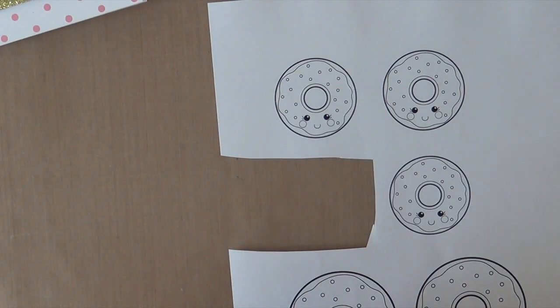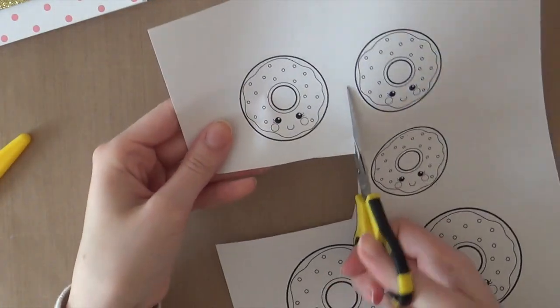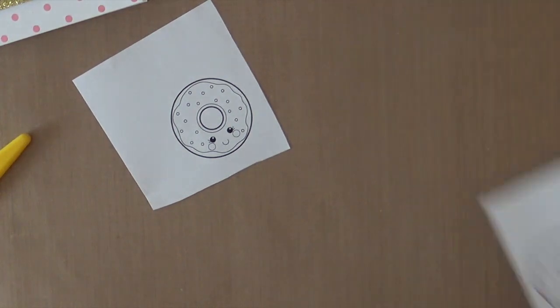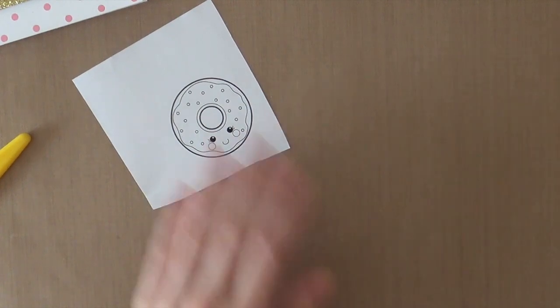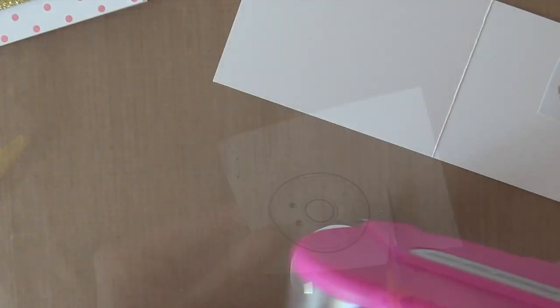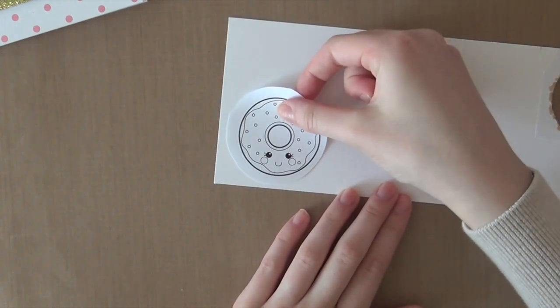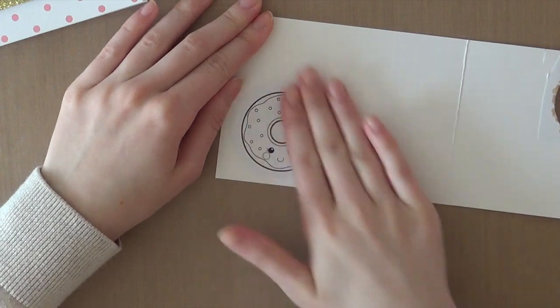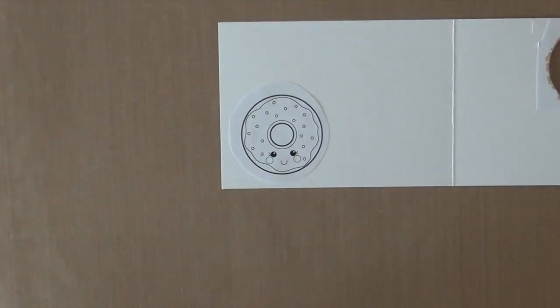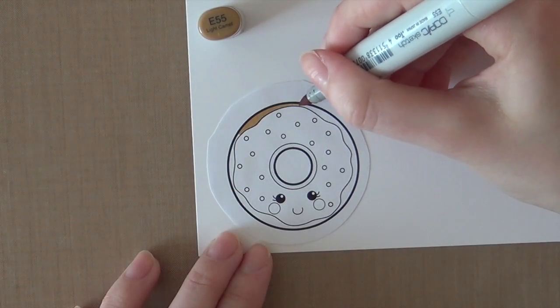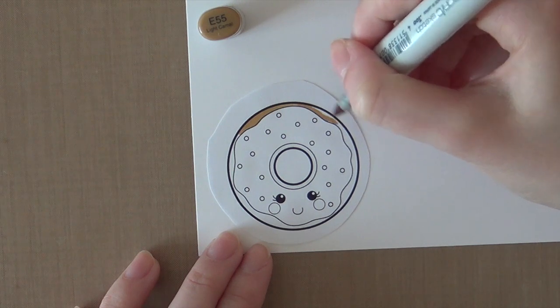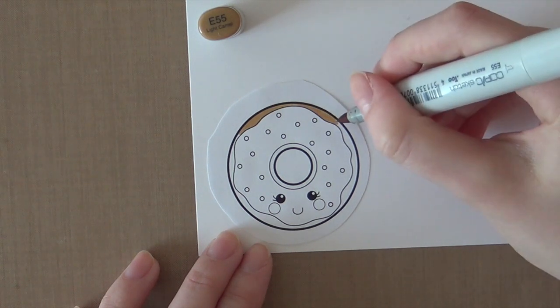I'm going to use the Adorable Kawaii Donut Digital Stamp from JW Illustrations. After opening the file, I just copied and pasted the donut into a Word document in different sizes. My dad printed this for me at work since we don't have a printer that has the right ink to use with Copic markers. The paper is kind of thin because it's just printer paper, so I adhered a piece of Neenah white cardstock behind it just so that it's a little bit heavier.